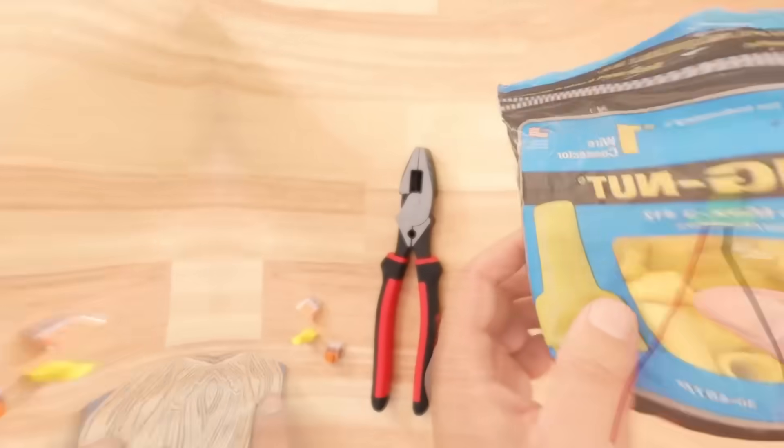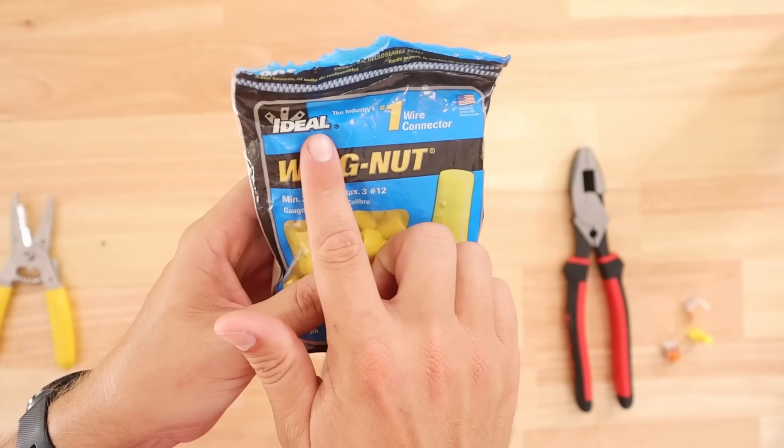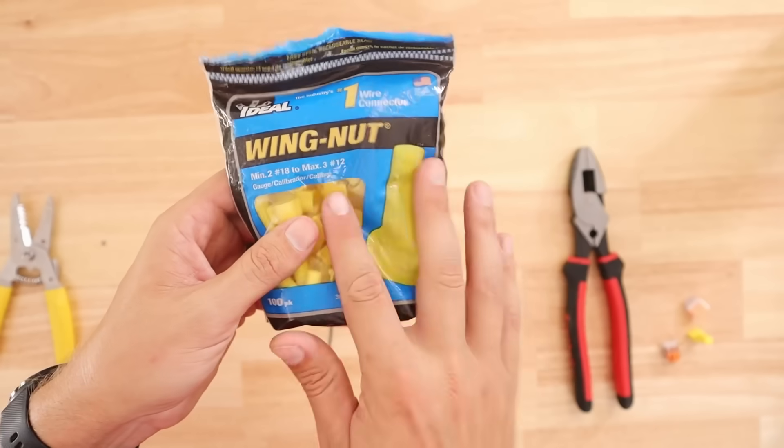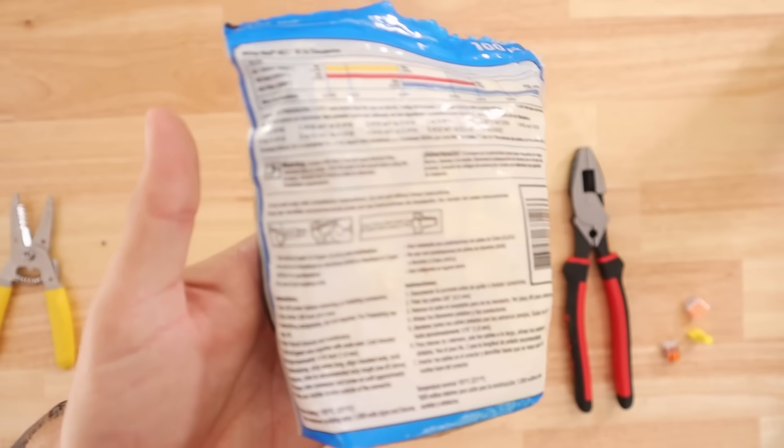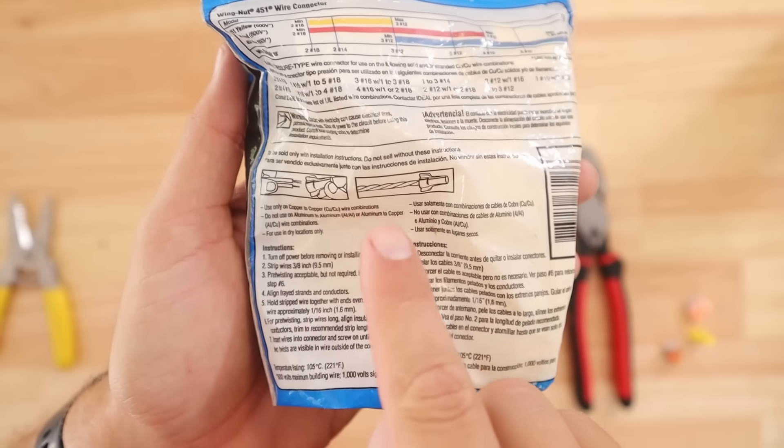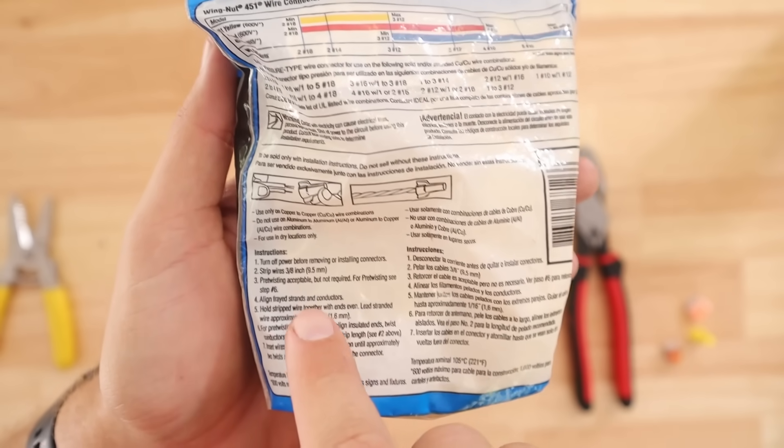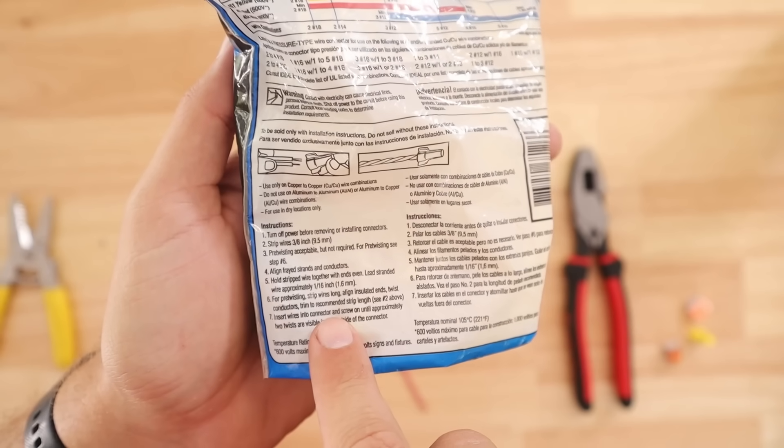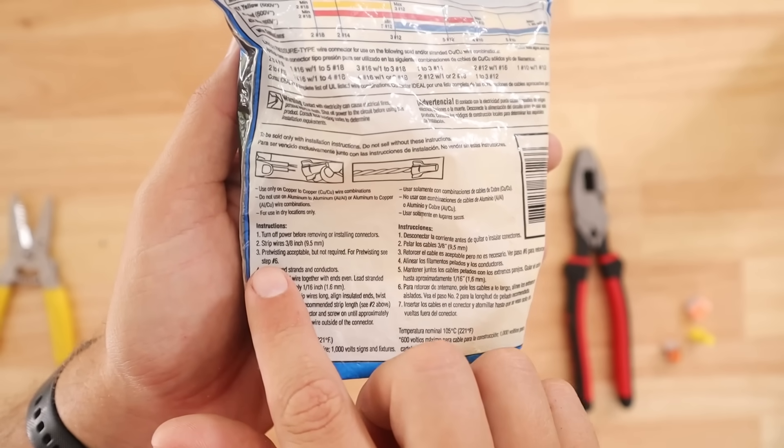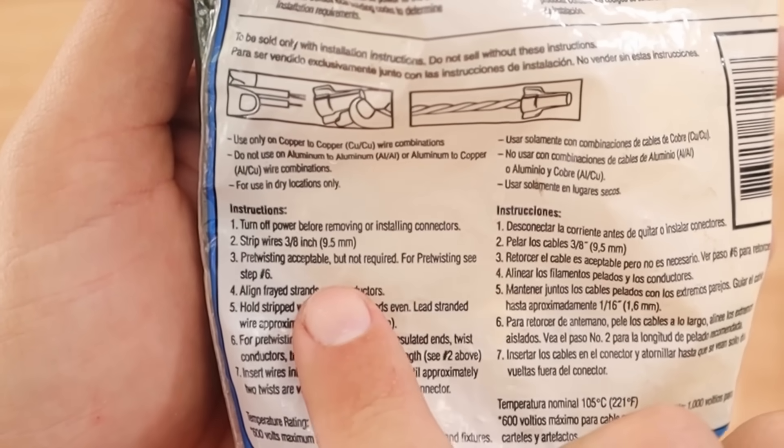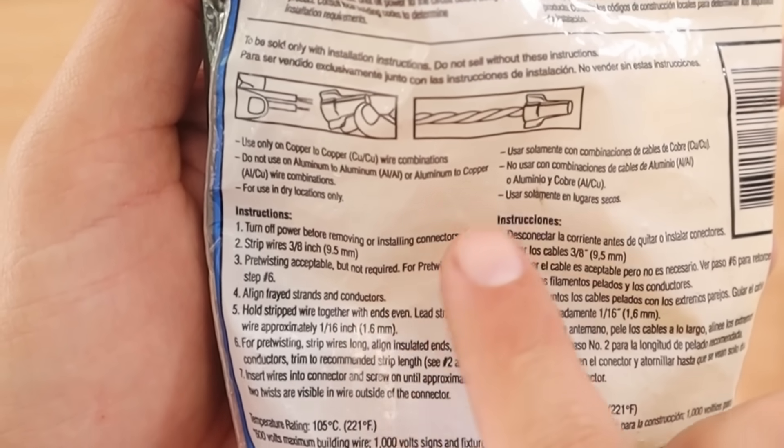So let's check out the packaging. So no doubt many of you have seen this packaging. Ideal is one of the top producers of wire nuts. Let's turn it over here to the back for the instructions and as you can see here they've got a diagram here as to how it should look and then they also have the instructions down here. When we get to the pre-twisting which is number three what it says is pre-twisting is acceptable but not required.